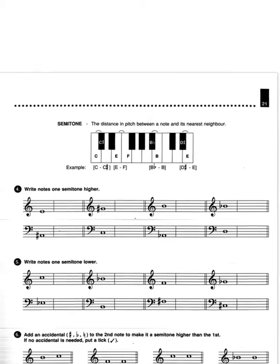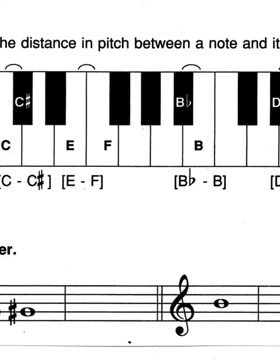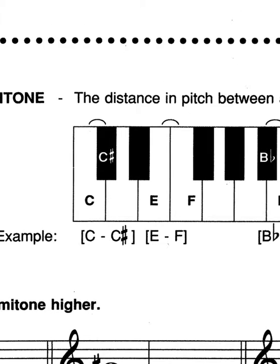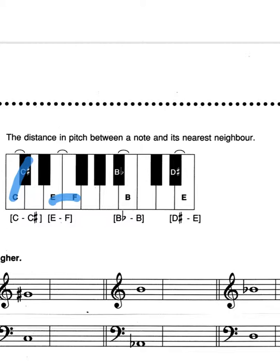And quite nicely here on this keyboard, they have highlighted the intervals on the keyboard that are semitones. So there you can see: C to C sharp, E to F is a semitone, B flat to B is a semitone, D sharp to E is a semitone. So those are just some examples.